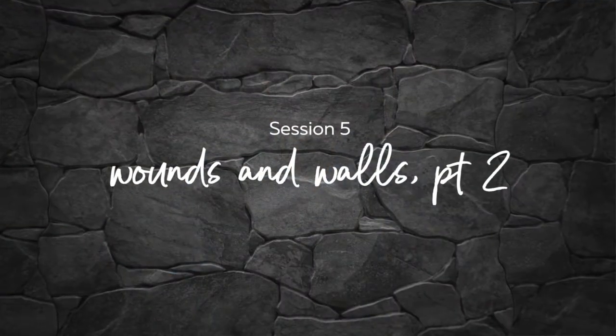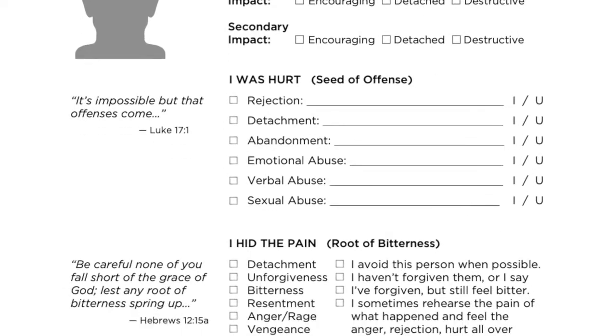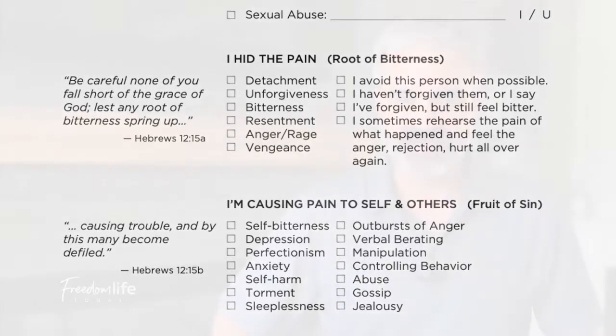Welcome to session five of The Greatest Journey called Wounds and Walls, Part Two. In this session, we're going to dive into the root-to-fruit connection of Hebrews 12:15. The goal is to take the wounds and walls terms from last session and begin to personalize them, apply them to our own stories. We'll walk through practical exercises including The Bitterness Tree and Faces of My Past, summarizing and defining the pain we've experienced with the most important people in our lives, as well as the pain we're causing to ourselves and others today. All of this will set us up to write our life story, and I'll read my own life story as an example.